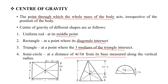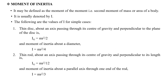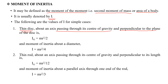The moment of inertia is defined as the second moment of mass or area. We will take different shapes to find the moment of inertia. For a thin disk, taking the axis through the centre of gravity, the moment of inertia about that axis is mr² by 2.